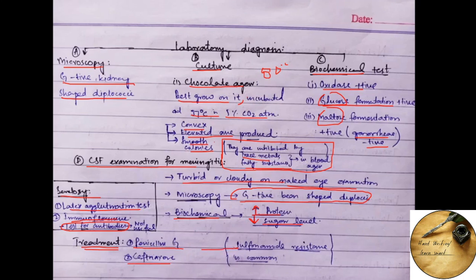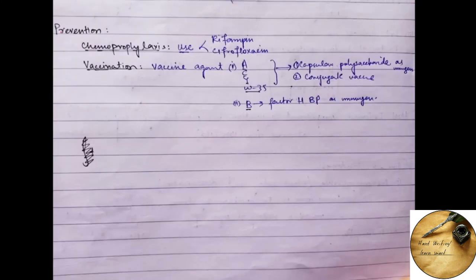Now you can prevent the disease caused by Neisseria meningitidis by chemoprophylaxis and vaccination. Chemoprophylaxis by using rifampin and ciprofloxacin. And in vaccination we can do vaccination against the A, C, Y and W-135 serotypes by using capsular polysaccharide as immunogen and they are conjugated vaccines. The vaccine against the B serotype contains Factor H binding protein as immunogen.